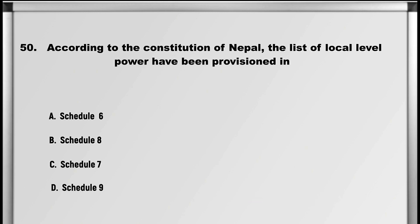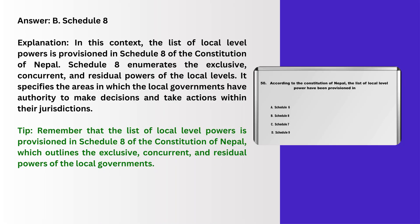Moving on to the last question: According to the constitution of Nepal, the list of local level powers has been provisioned in: A. Schedule 6, B. Schedule 8, C. Schedule 7, D. Schedule 9. Answer: B. Schedule 8.